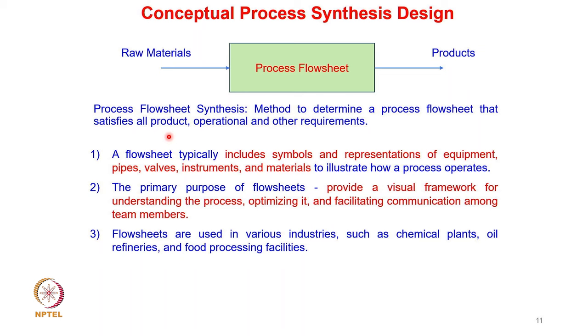Process flow sheet synthesis is the method to determine a process flow sheet that satisfies all product, operational, and other requirements. A flow sheet includes symbols and representations of equipment, pipes, valves, instruments, and materials to illustrate how a process operates. Its primary purpose is to provide a visual framework for understanding and optimizing the process and facilitating communication among team members. Flow sheets are used in various industries such as chemical plants, oil refineries, and food processing units.